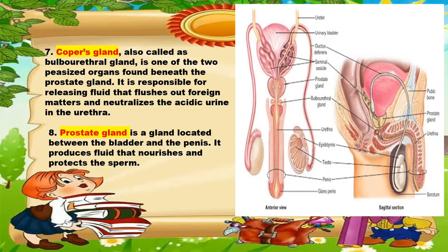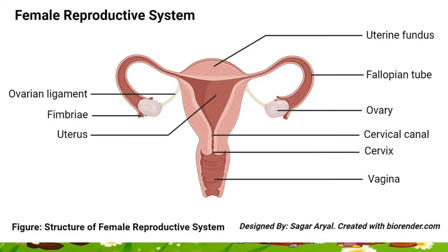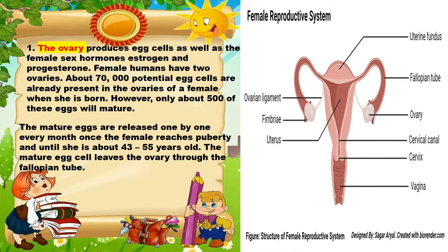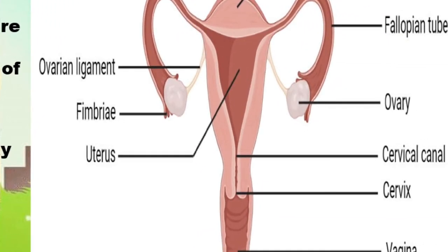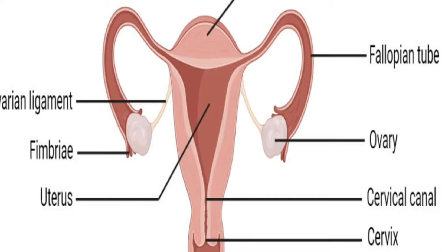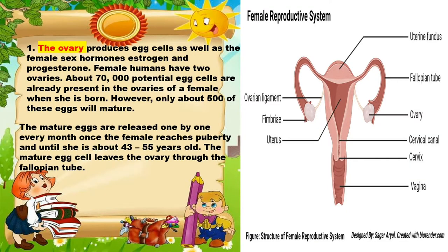Let us also discuss the different parts of the female reproductive system. The first one is the ovary. It produces egg cells as well as the female sex hormones, estrogen and progesterone. Female humans have two ovaries. About 70,000 potential egg cells are already present in the ovaries of a female when she is born.